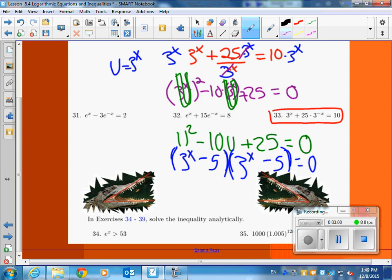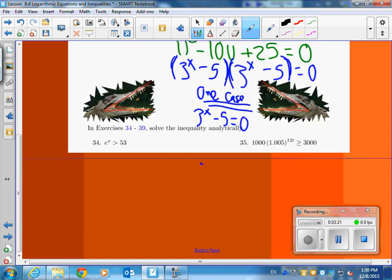Okay, so now you have two, actually you only have one possibility. One case. And that is, 3 to the x minus 5 equals zero. So if 3 to the x minus 5 equals zero, how do we solve for x? Oh, we can't do that. There's no way. Even if we throw that 5 on the other side, how are you ever going to solve for x?